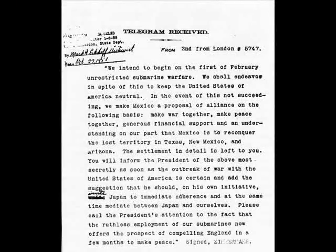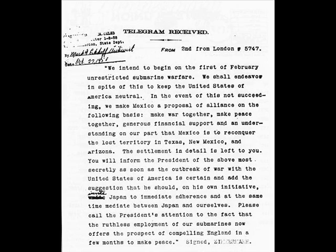The United States, by the last year of the war — this is 1917 — would enter this war after the British intercepted and deciphered a secret communication between Mexico and the German government under Kaiser Wilhelm II. This prompted the United States Congress to act and declare war based on the assumption that Mexico, if this had been an alliance, lay as a serious threat to national security on the American continent.